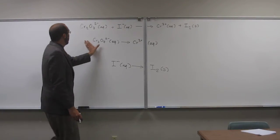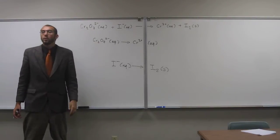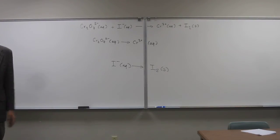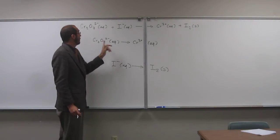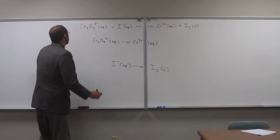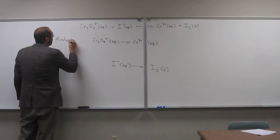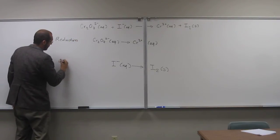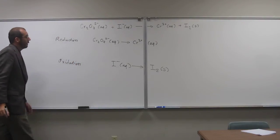So remember what I said, if you're getting more oxygens on you, that means you're being oxidized. If I'm getting less oxygens on me, I'm getting reduced. So if I look at this guy, chromium, he's getting less oxygens on him, so he's being reduced. So this is the reduction. And then that would mean this is the oxidation.